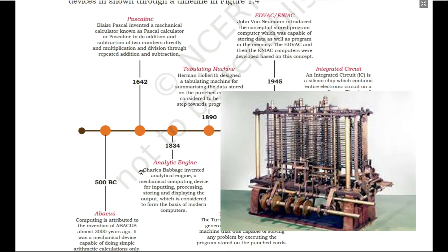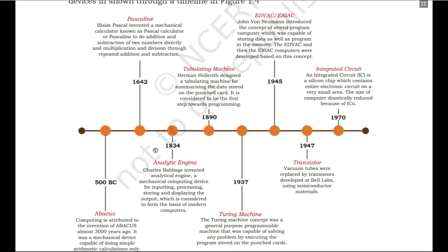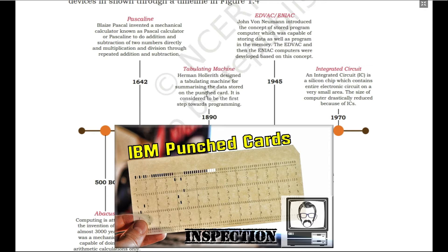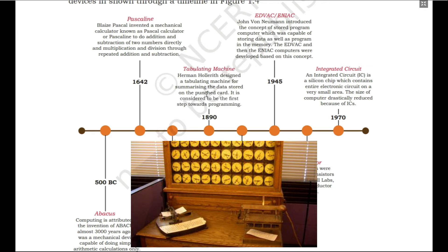After 1834, in 1890, there was another major change — the tabulating machine. Mr. Herman Hollerith designed a tabulating machine for summarizing the data stored on punch cards. You had to store data on a punch card and then give it to the tabulating machine. It is considered to be the first step towards programming, because storing data on the punch card and giving it to the machine for calculation was something called programming — you had written a program on the punch card and given it to the machine.